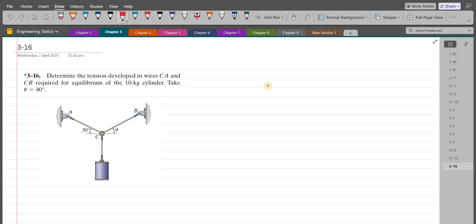Welcome back to the solutions manual. In this video, we will solve problem 3-16 from R.C. Hibbeler Engineering Statics Sixth Edition. According to this problem, we have to determine the tension developed in wires CA and CB required for the equilibrium of the 10 kg cylinder, and we have to take theta as 40 degrees.